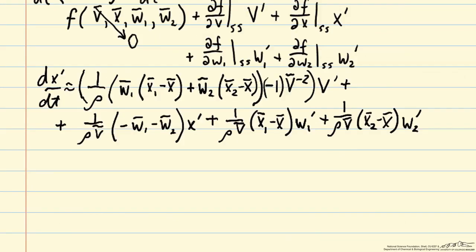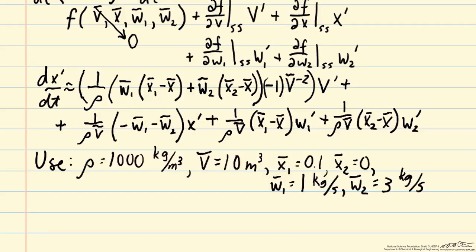But let's plug in some numbers. We'll use the same values that we had used previously. And from these steady-state inlet conditions, we can then calculate the steady-state outlet conditions. So w̄ is just the sum of the two inlet streams, so that's 4 kg/s. And x̄ is 0.025, which is an intermediate value between x1 and x2, which we are blending.